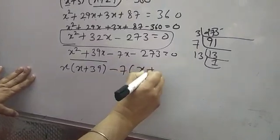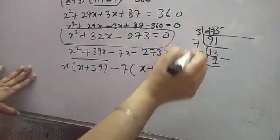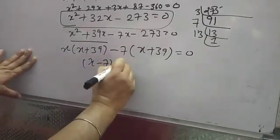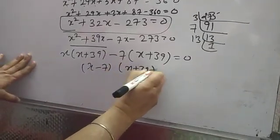From here we take X common, X plus 39 comes. Take minus 7 common, X plus 39 comes. So 7 into 39 is 273. Now X minus 7 equal to 0, or X plus 39 equal to 0.